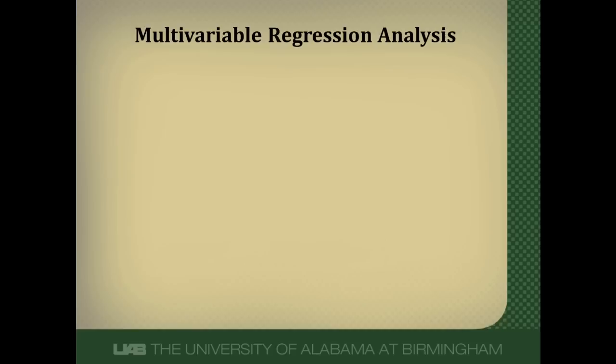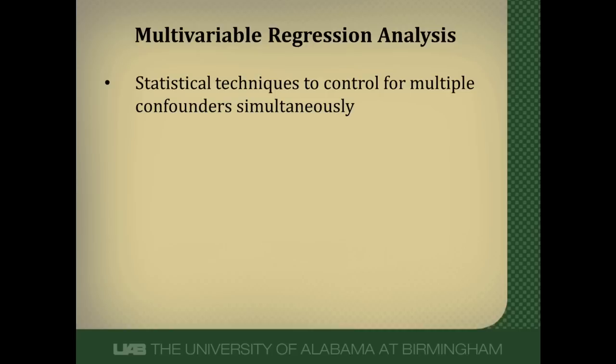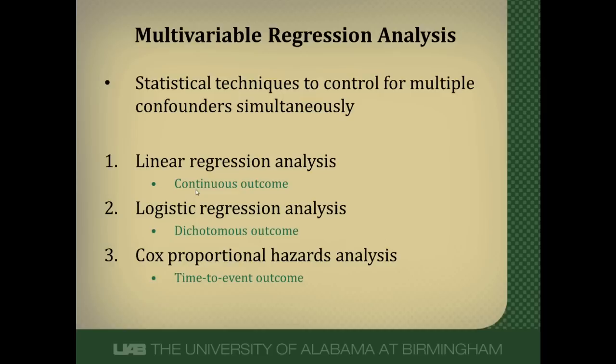Multivariable regression analysis refers to a variety of statistical techniques to control for multiple confounders at the same time. It comes in different forms depending on the outcome. If your outcome is continuous, like blood pressure, you use linear regression. If your outcome is dichotomous — a yes-no outcome like having a stroke or diabetes — you use logistic regression. If you have a time-to-event outcome, like time-to-remission or time-to-death, you use Cox proportional hazards analysis.